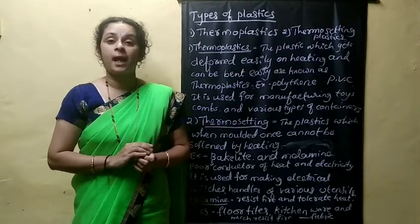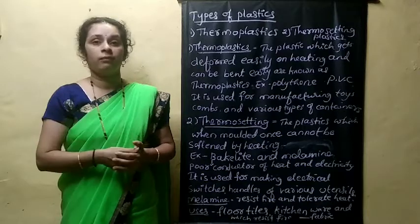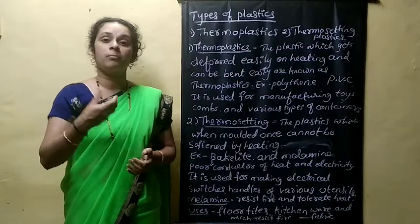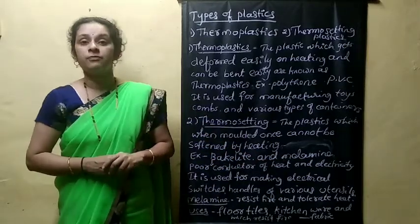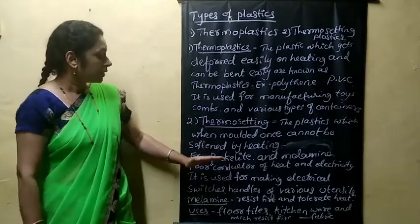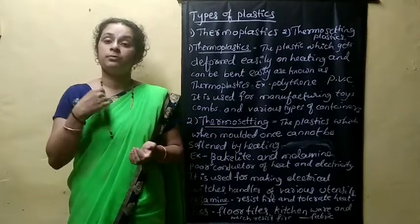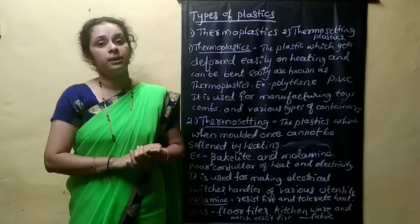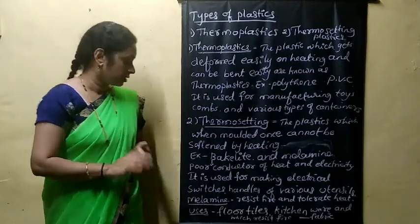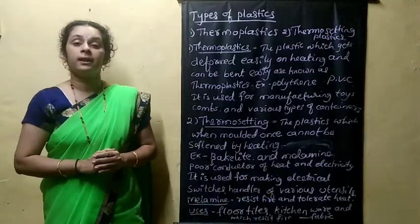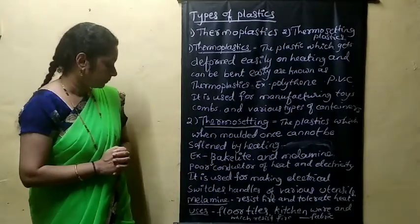Very good examples of thermosetting plastic are bakelite and melamine. Bakelite is a poor conductor of heat and electricity — it will not conduct heat and will not allow electricity to pass through it easily. That is why bakelite is used for making electrical switches and handles of various utensils and kitchen wares.